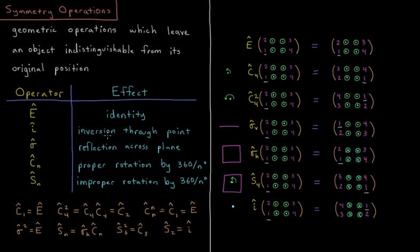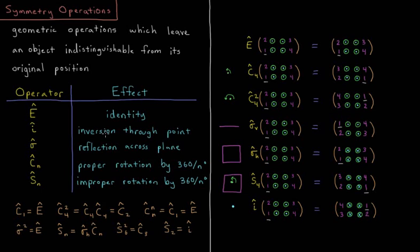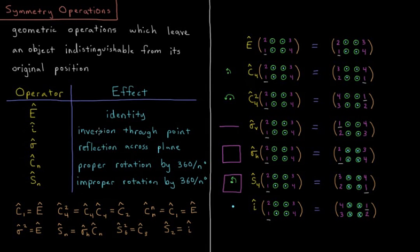Whenever you have a location in Cartesian space like x, y, z, inversion brings you to minus x, minus y, minus z when you invert through the origin.